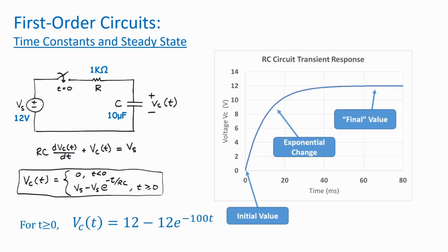In reality, the voltage never actually reaches exactly 12 volts over finite time, but if you take the limit as t goes to infinity for the equation for Vc(t), you'll see that Vc(t) approaches 12 volts. For engineering design and analysis work, it's generally acceptable to say that Vc reaches 12 volts as a final value.